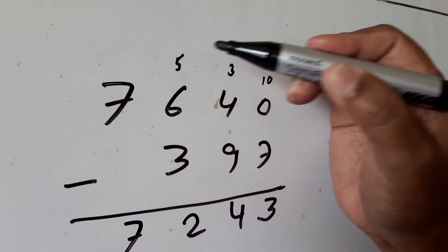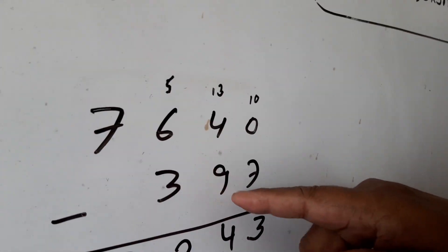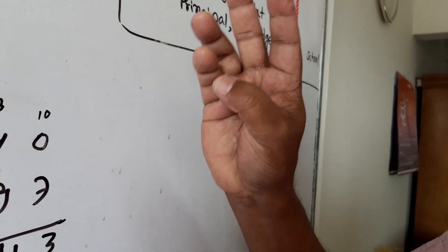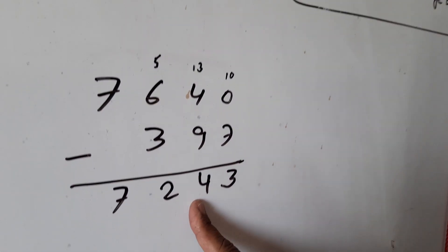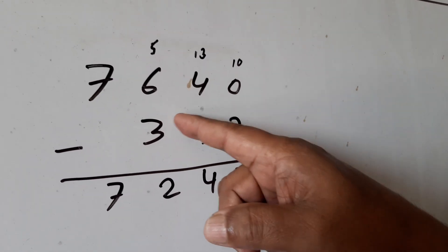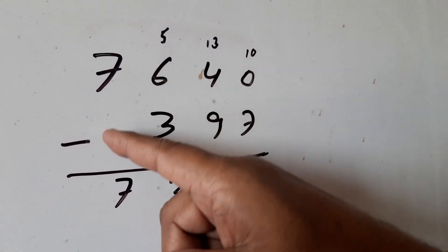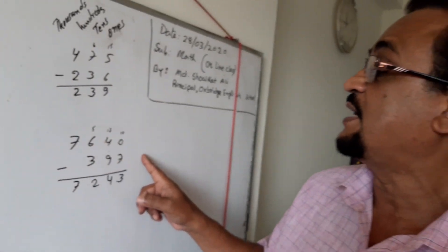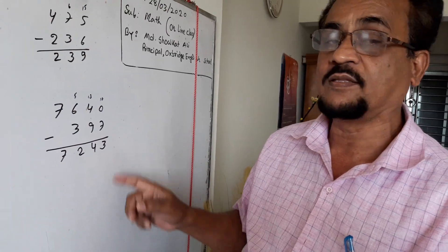Here will remain 5, and here will be 13. After 9: 10, 11, 12, 13 — that's 4. Then 5 minus 3 equals 2, and 7 minus 0 equals 7. 7,640 minus 397 equals 7,243. Thank you.